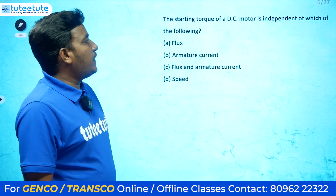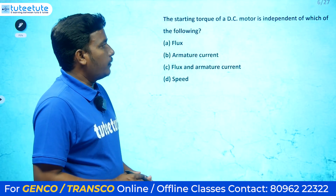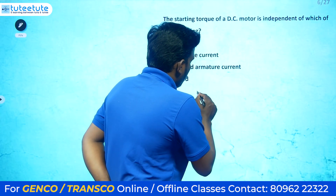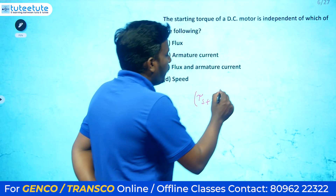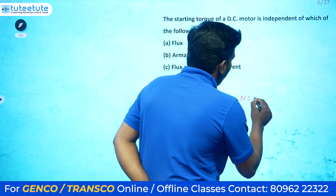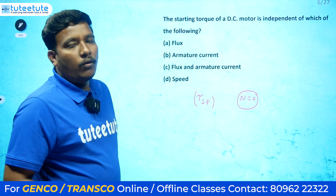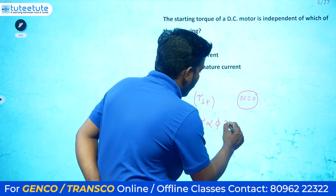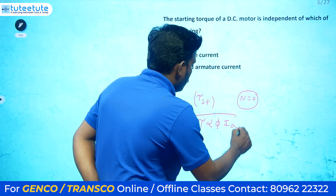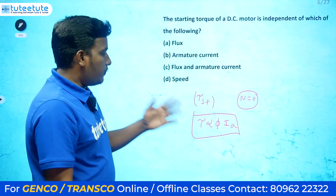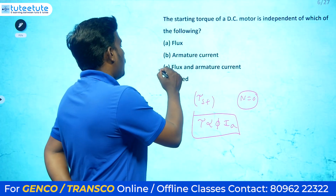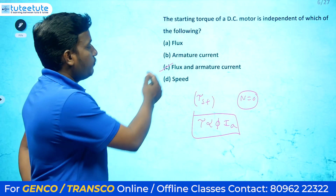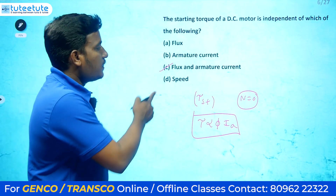Next question: the starting torque of a DC motor is independent of which of the following? At the time of starting, speed equals zero. We know that torque is directly proportional to armature flux and armature current. So the starting torque depends on both flux and armature current. The most appropriate answer is option C.